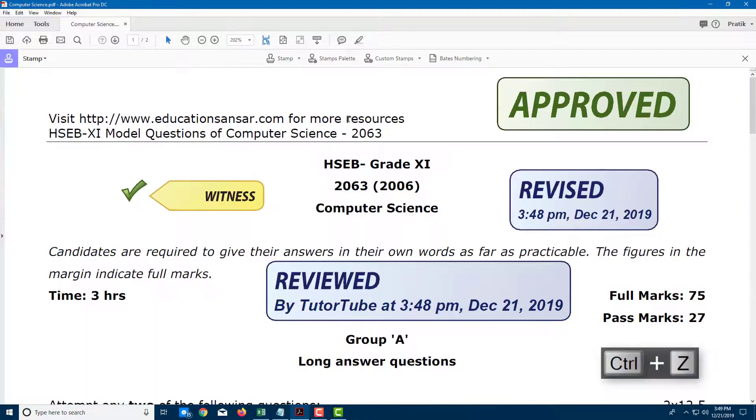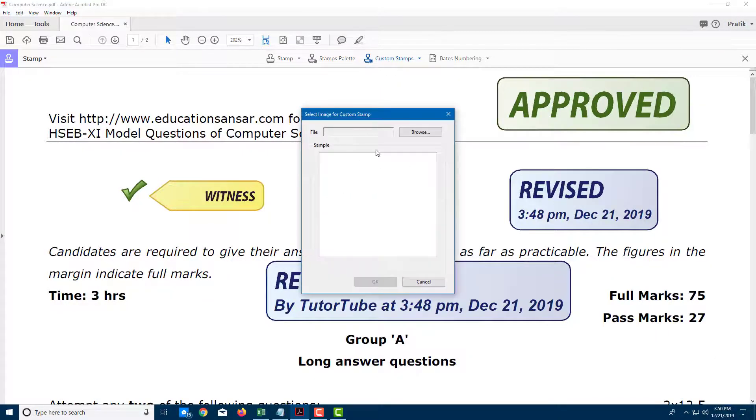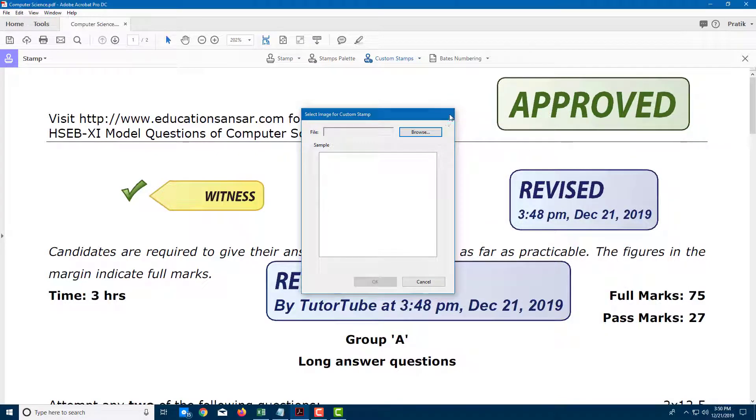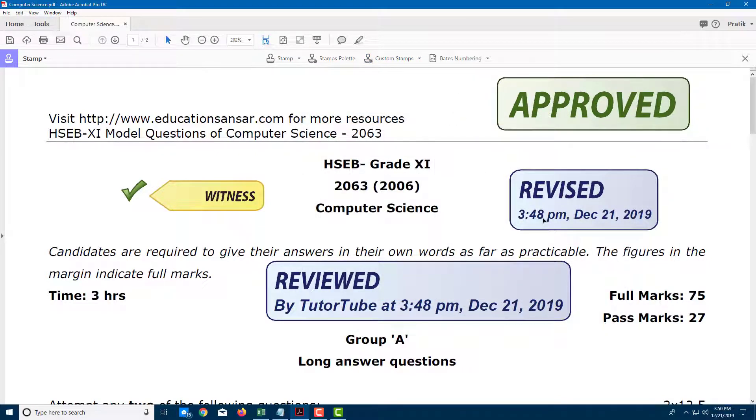Let me just press Ctrl+Z to undo that. There are some custom stamps as well—you can create a stamp right here and select it. It's simply the same as importing a stamp. That is how you can use the stamp tool inside Adobe Acrobat Pro DC to add review and approval stamps inside PDF documents.